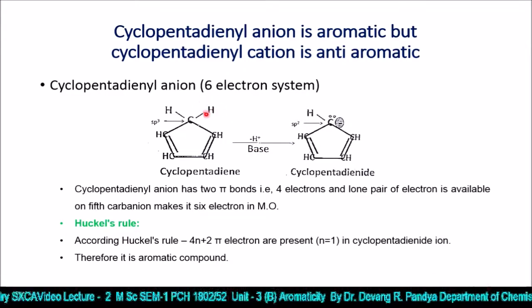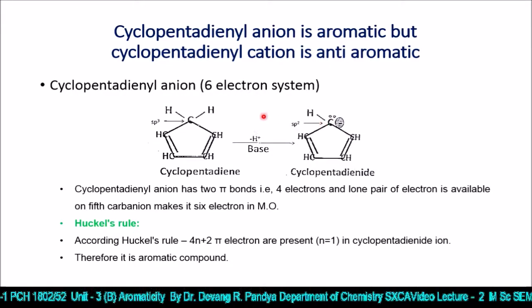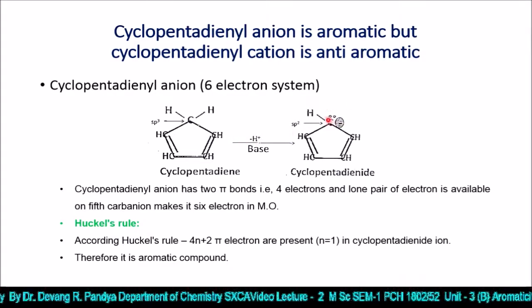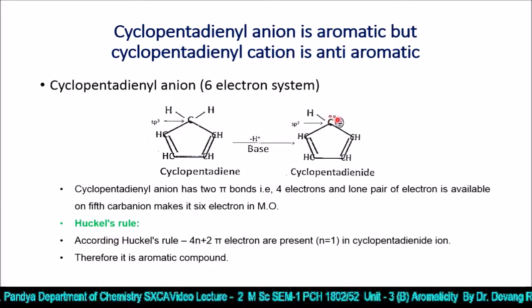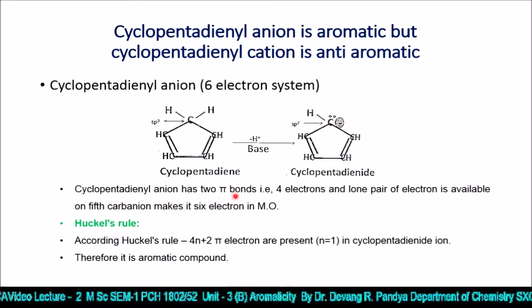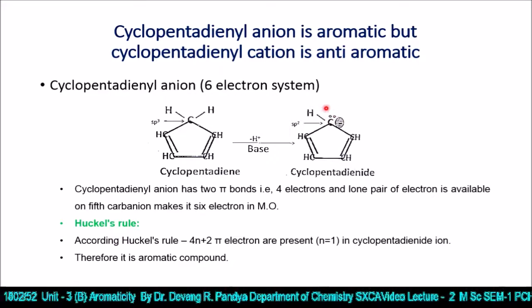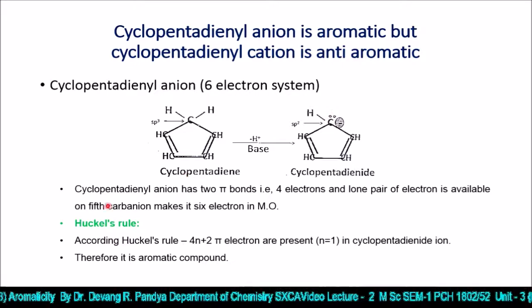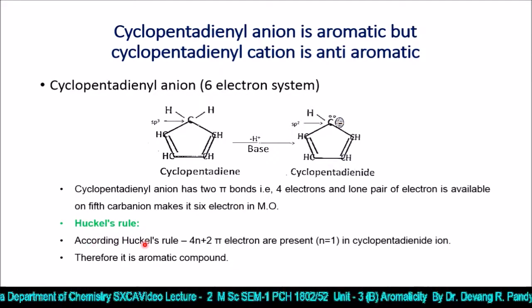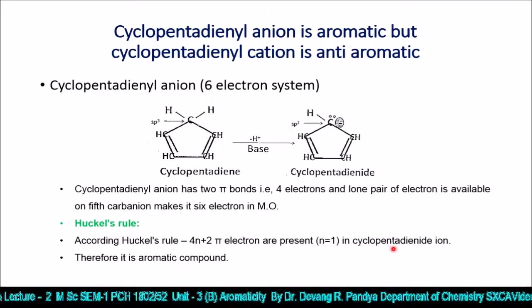In the presence of a base, one proton is removed from cyclopentadiene to give the cyclopentadienyl anion. The proton leaves, and the pair of electrons remains on the carbon, creating a carbanion. The cyclopentadienyl anion has two pi bonds (four electrons) plus one lone pair on the fifth carbon, making six electrons total in the MO. According to Hückel's rule, 4n+2 π electrons are present where n=1.